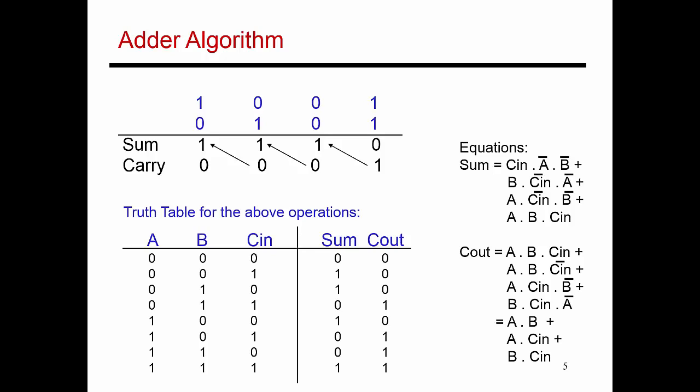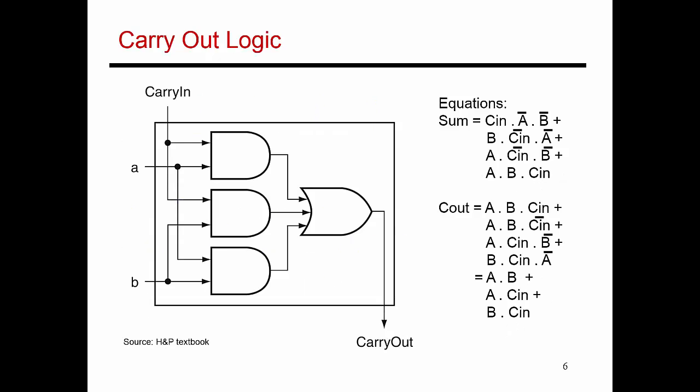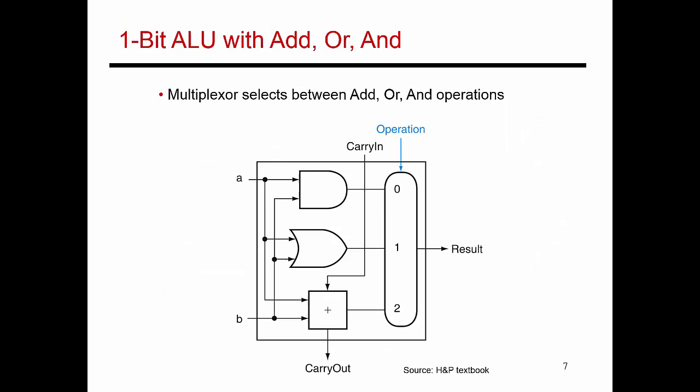Now that we've seen the logic involved in doing a one-bit addition, and we've also seen the circuit required to do that one-bit addition, let's get a little bit more ambitious and design a full-fledged arithmetic and logical unit. This ALU is going to be able to process 32 bits and can also do more than just basic addition. Let's start with small steps.